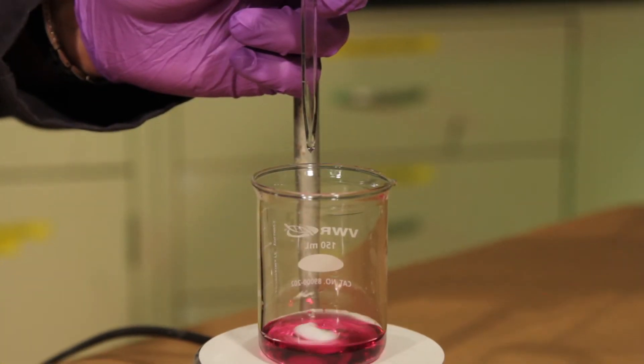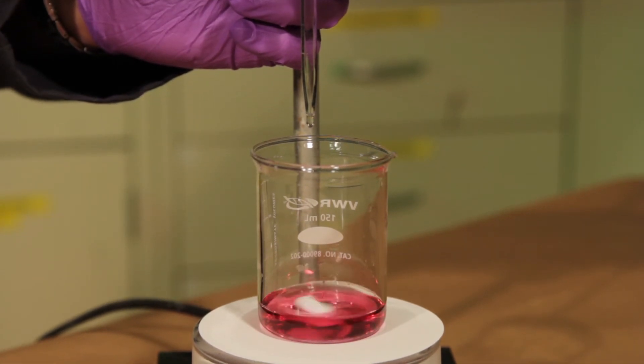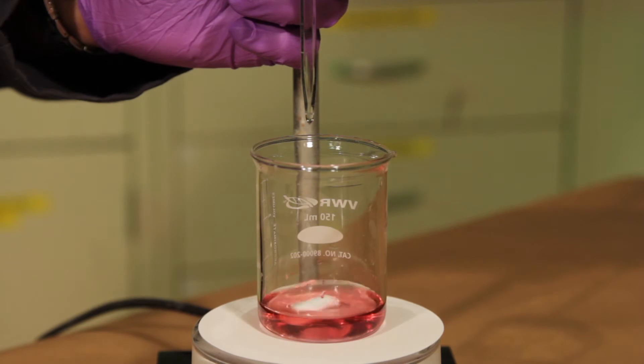Eventually, we will need to add the titrant at a slow rate, even one drop at a time. At the endpoint, the indicator will change color, and we can stop additions and read the graduations on the side of the burette.